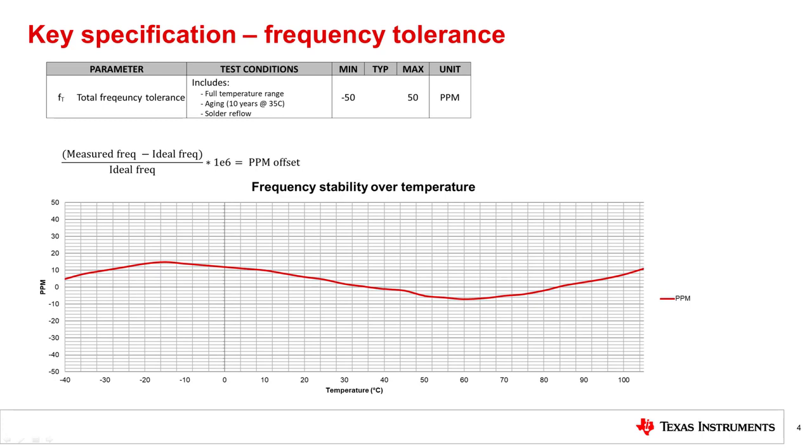Typically, frequency deviation over operating temperature range plot is provided on the datasheet. In this example, at 100 MHz frequency, a 10 PPM stability over temperature would equate to a 1 kHz shift. Note that aging and solder reflow would be added on top for the total frequency tolerance.